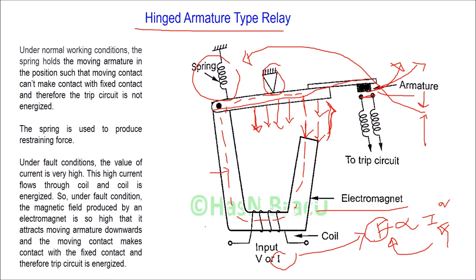During fault condition, the value of current will be high. If the operating force is high, then this moving armature will be moved downwards, and the moving contact of the moving armature will get connected with the fixed contact. When the moving contact and fixed contact get connected, the trip circuit will be closed. The energized trip coil will further open the moving contact of the circuit breaker. This is how a hinged armature type relay works.